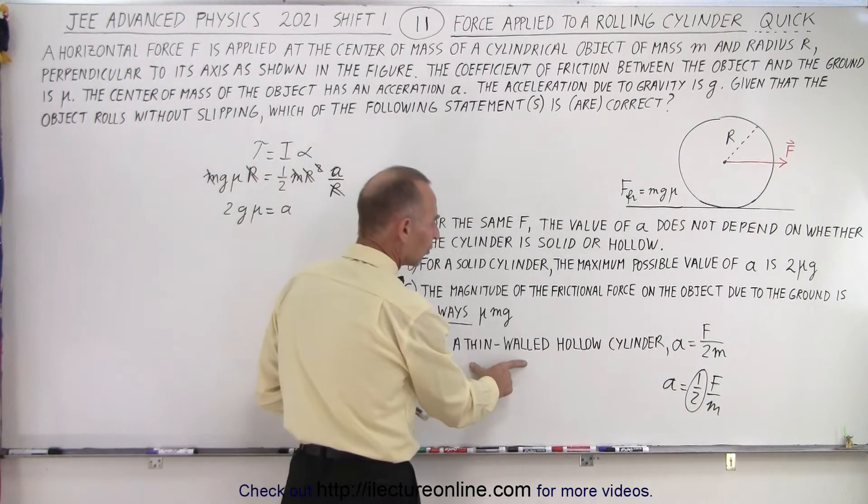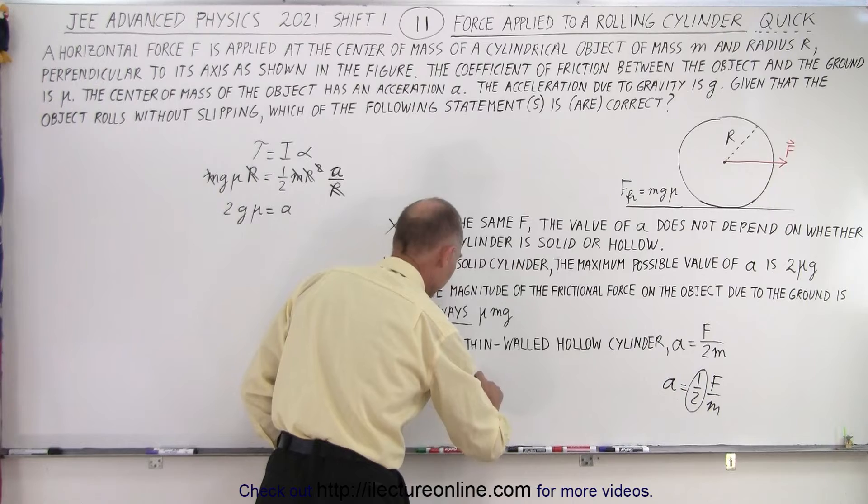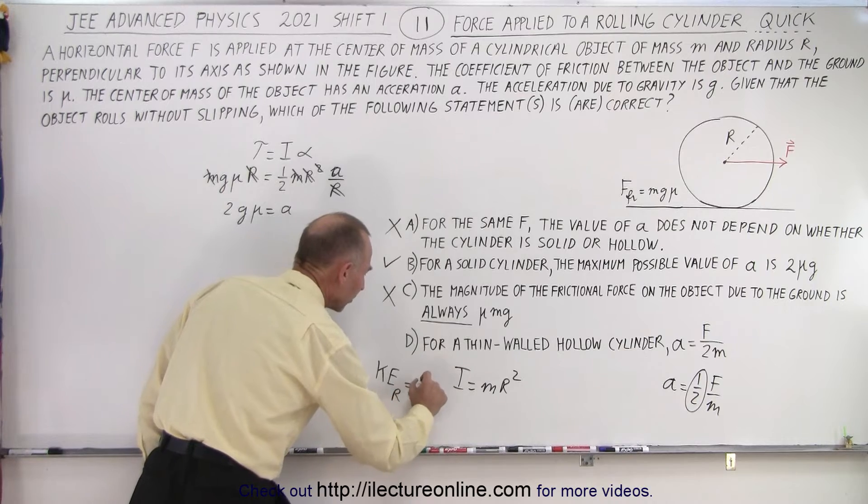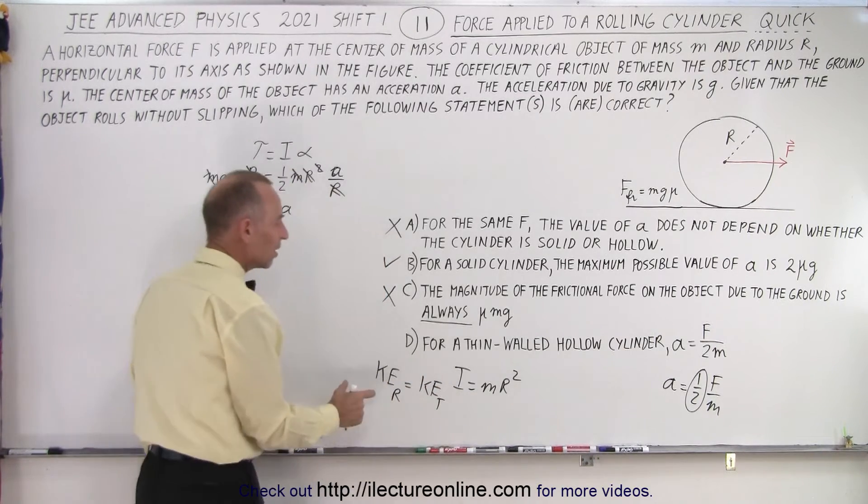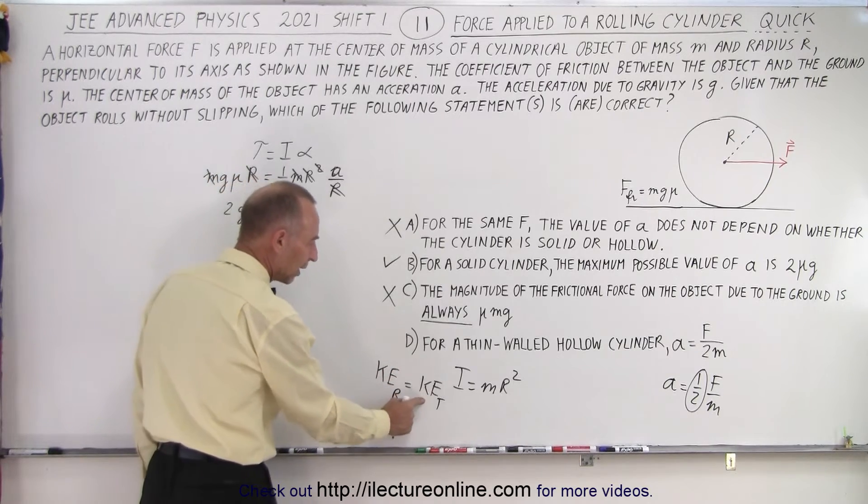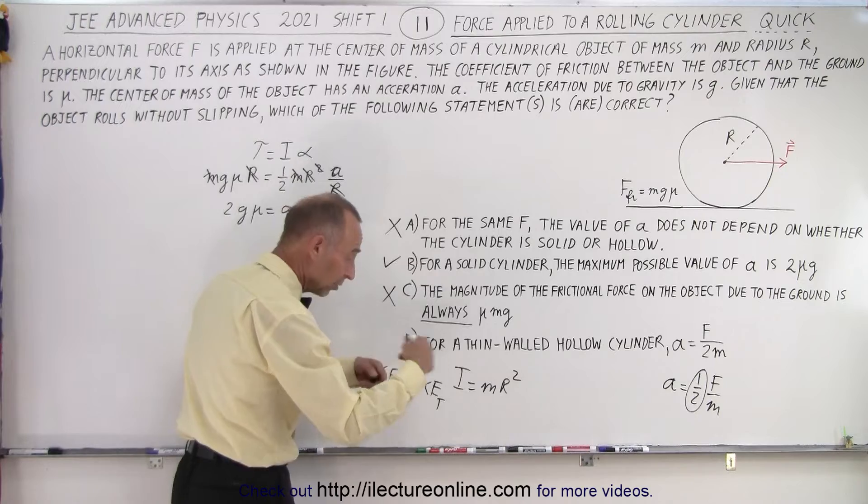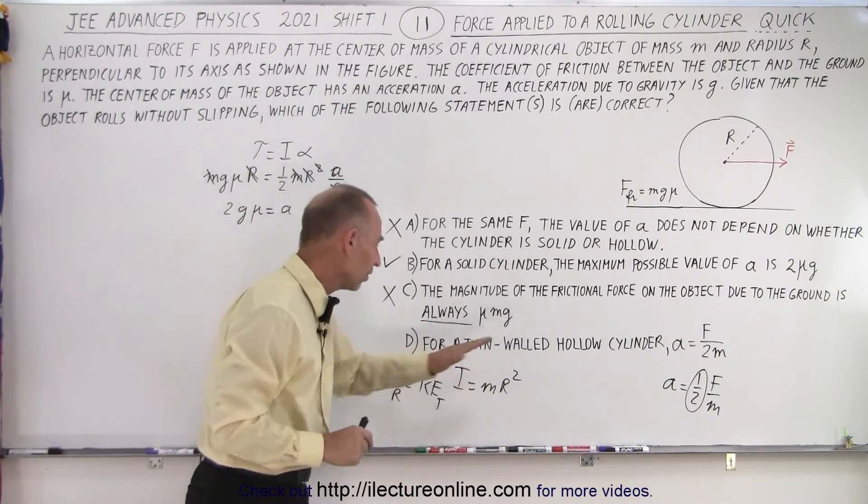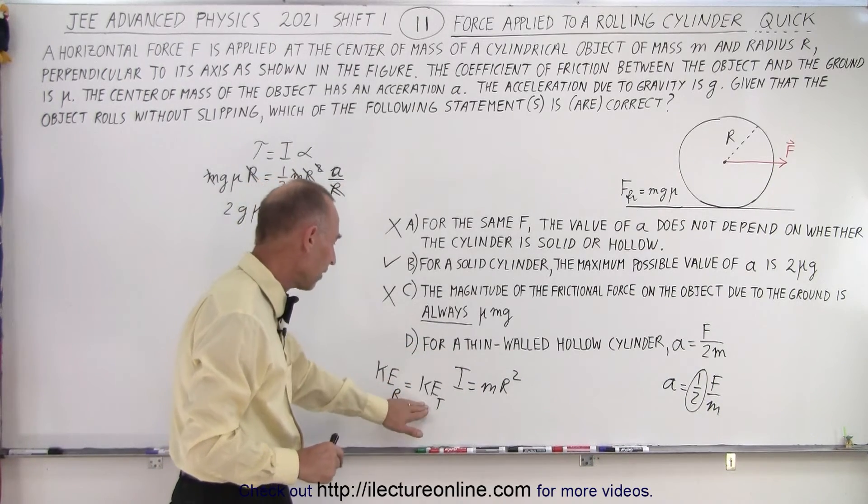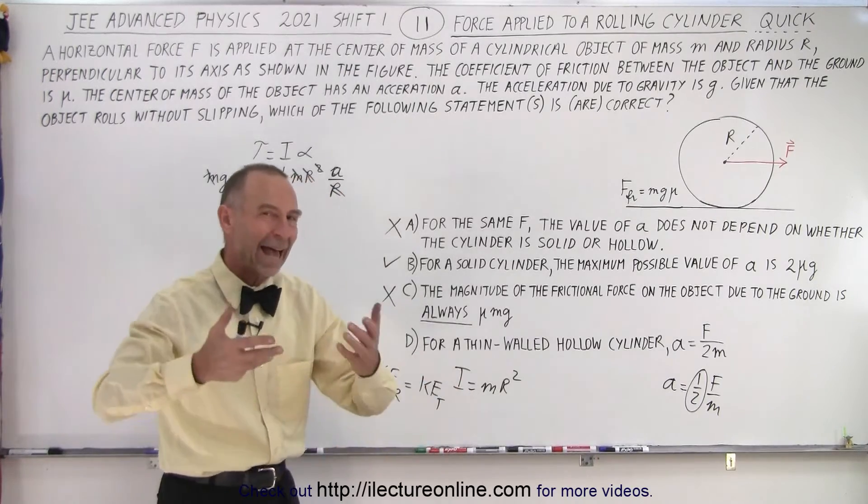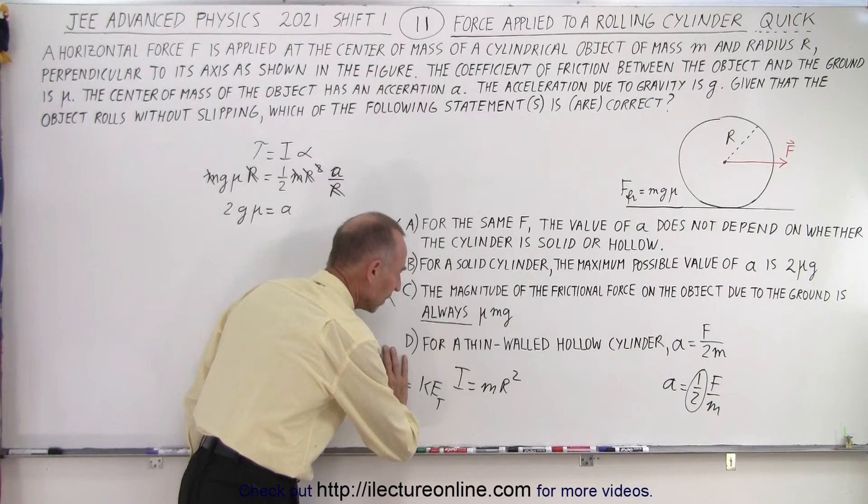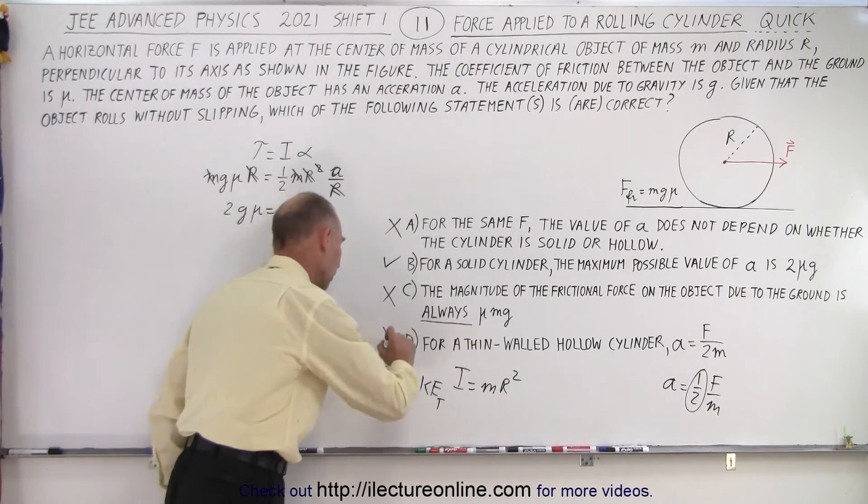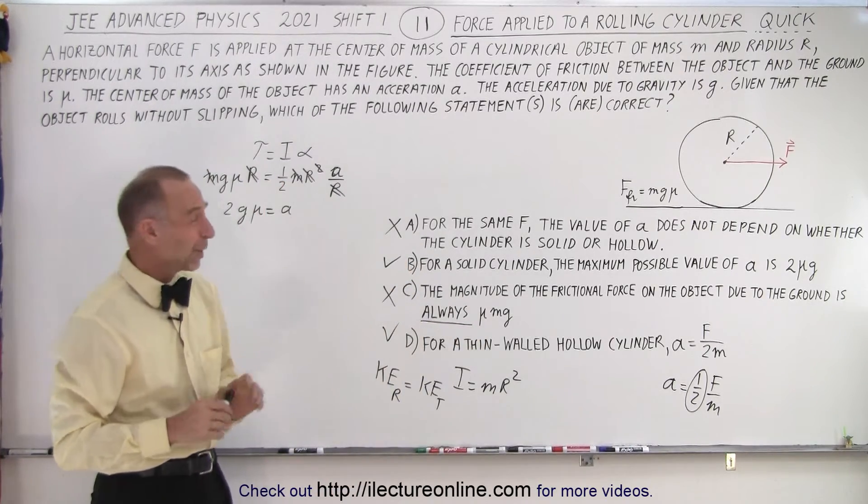With a thin wall hollow cylinder we know that the moment of inertia is equal to mr squared, and that means that the rotational kinetic energy must equal the translational kinetic energy, which means that half the work goes into making it rotate, the other half is used to make it translate or move forward. And because of that we know that for a thin walled hollow cylinder, since half the work goes into rotating it and half the work goes into moving it forward, you will only get half the acceleration. So since half the energy is used to make it rotate, the acceleration is going to be half the normal acceleration and so that one is correct.